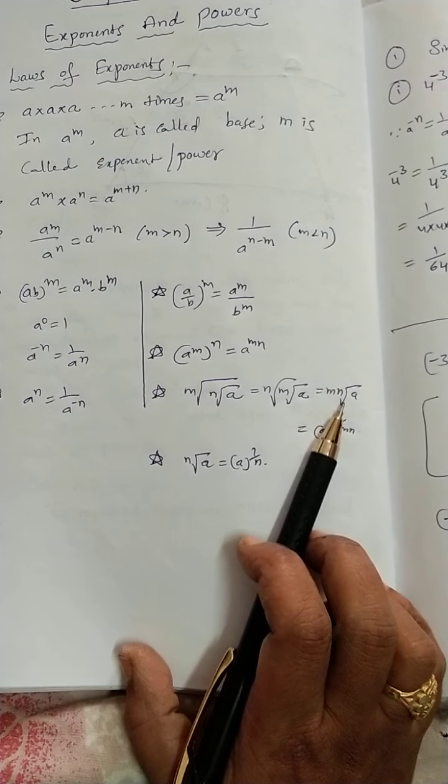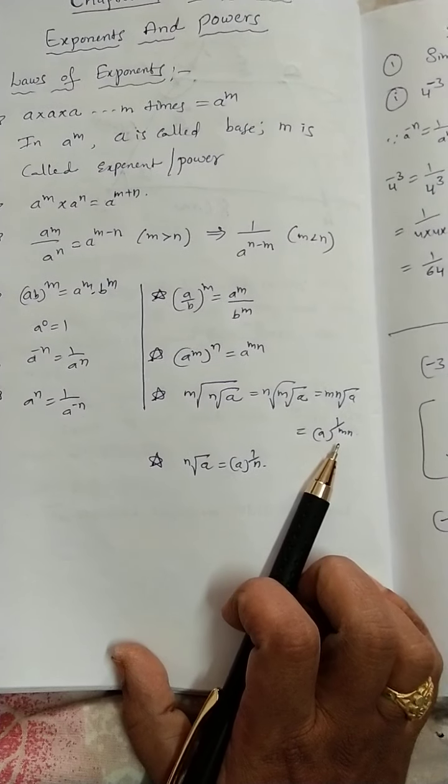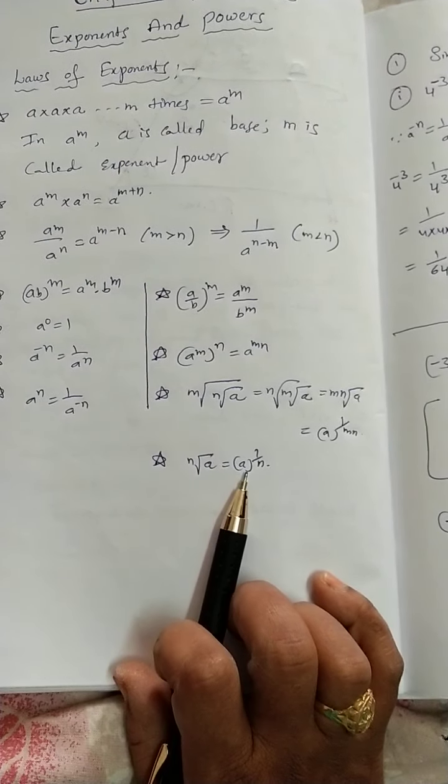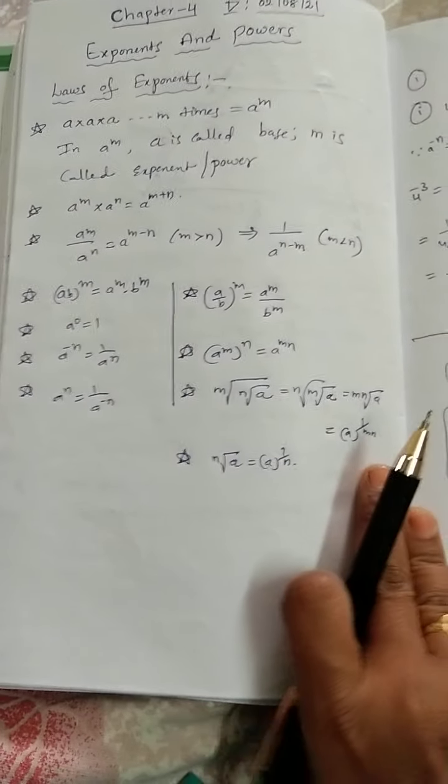If you do the cancellation of root, instead of root, we should write 1 by A. So 1 by MN. So, N root A is equal to A power 1 by N. These are the laws of exponents.